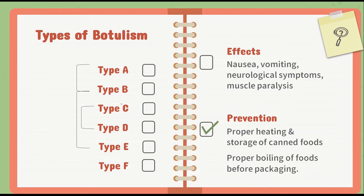There are six types of botulism: Type A, B, C, D, E, and F, divided into three groups. Group 1 includes Type A, Type B, and Type F — these are mesophilic, meaning they can grow at room temperature. Group 2 includes Type E, which are psychrotrophic. Group 3 includes Type C and Type D.